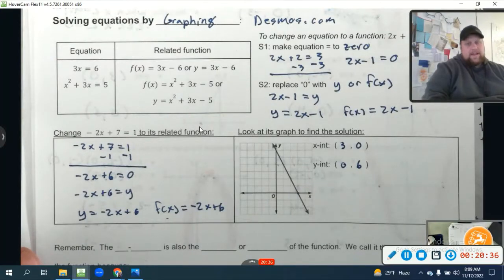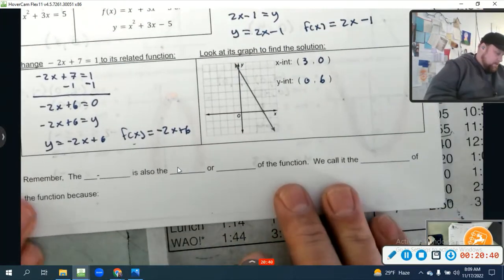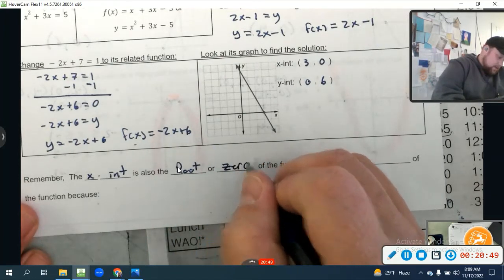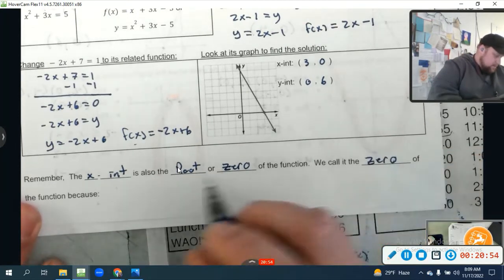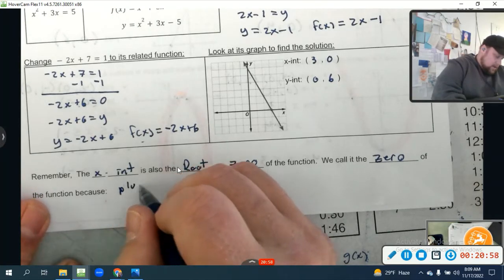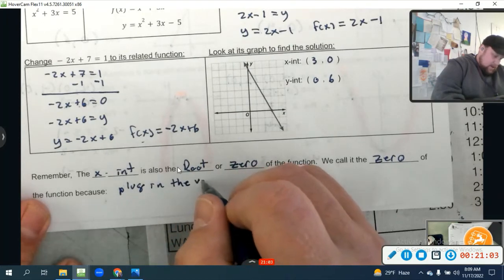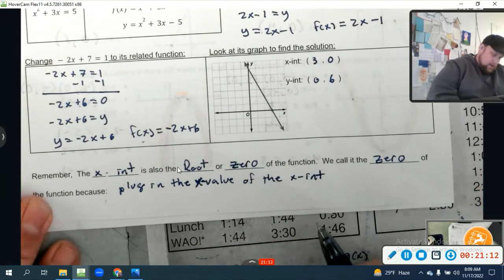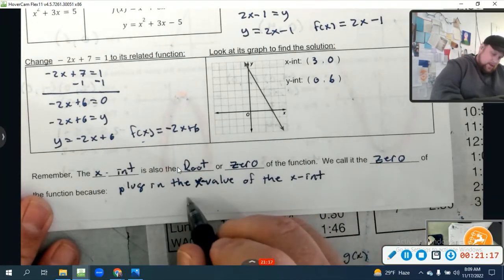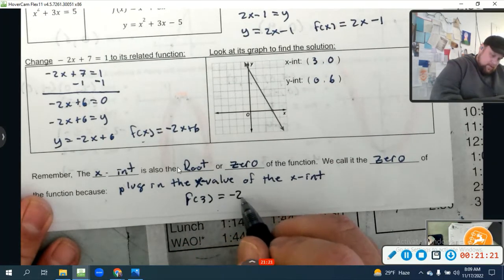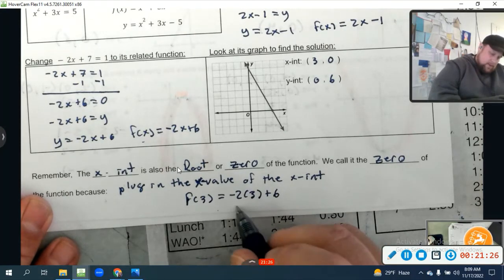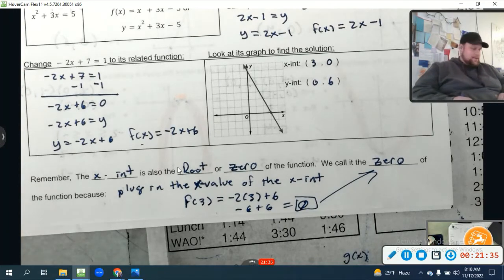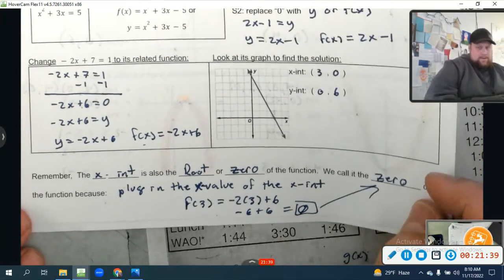And that is how we use Desmos. Remember, the x-intercept is also the root or zero of the function. We call it the zero of the function because, let's plug in the x value of the x-intercept. Looking back at this function, the x-intercept's x value is 3. Let's plug in 3: f(3) = -2(3) + 6, which is -6 + 6 = 0. When you plug in the x-intercept, it'll give you a zero every time.